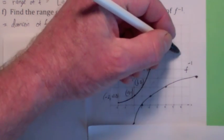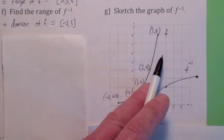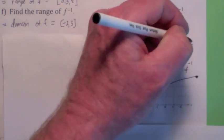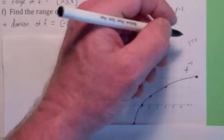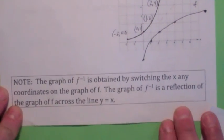But you do notice an interesting property here. The graph of f inverse is symmetric with f across the line y equals x, isn't it? It's a reflection of the graph of f across y equals x. That's what this says.